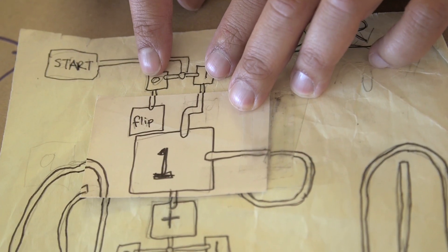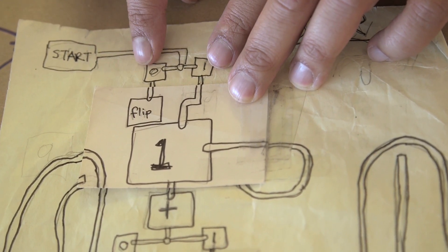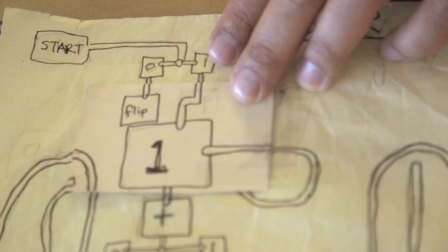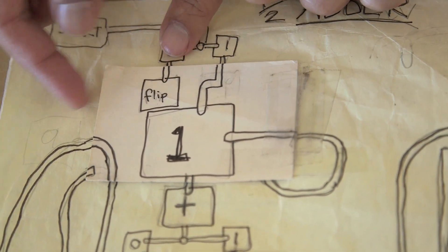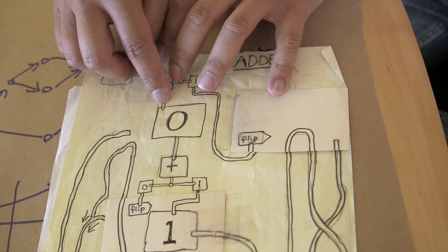Your first choice is whether you want to choose zero or one. Which would you like to choose? Let's choose zero. So you choose zero. That leads to this instruction to flip. You flip the page.